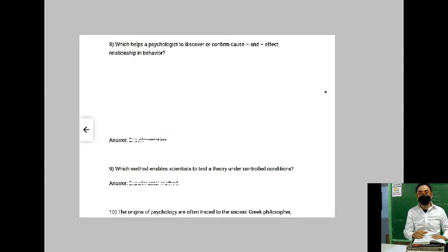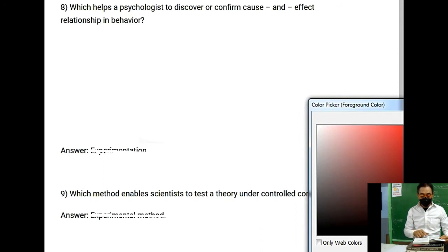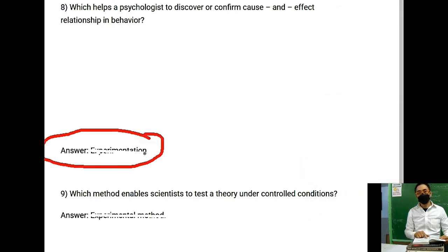Let's continue on number eight: Which helps a psychologist discover or confirm cause and effect relationship in behavior? Number nine: Which method enables the scientists to test a theory under controlled conditions? You might notice guys, I just erase a portion of the answer for you to have a clue on the answer.